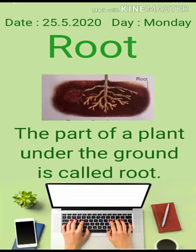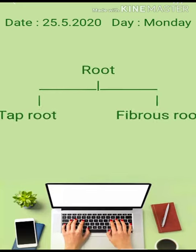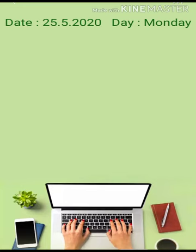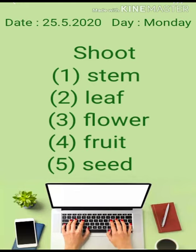The part of a plant under the ground is called root. There are two types of root: tap root and fiber root. Shoot has five parts — first is stem, second is leaf, third is flower, fourth is fruit, and fifth is seed.